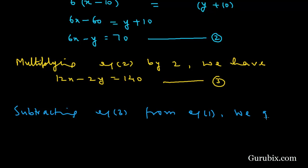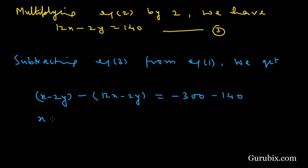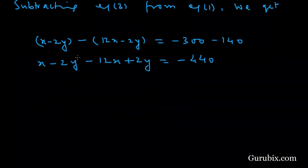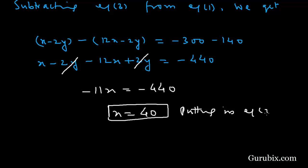Now we subtract equation number 3 from equation number 1: (x − 2y) − (12x − 2y) = −300 − 140. Simplifying: x − 2y − 12x + 2y = −440. The −2y and +2y cancel out, leaving −11x = −440, so x = 40.